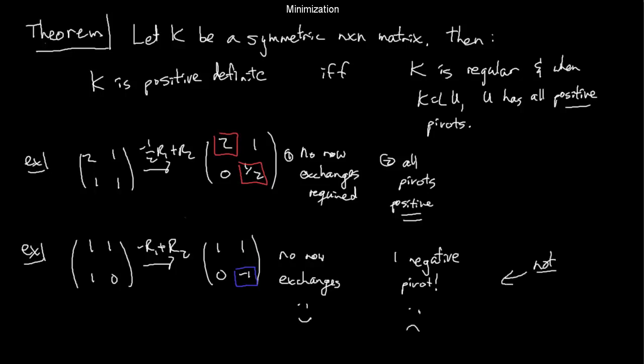In short, the bottom one is not positive definite because it has a negative pivot in its LU decomposition. And the top one is positive definite because all the pivots are positive.